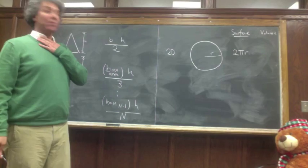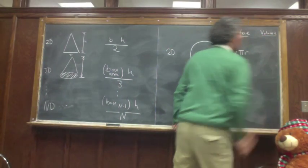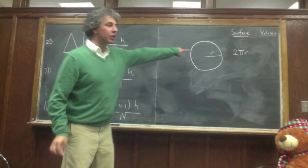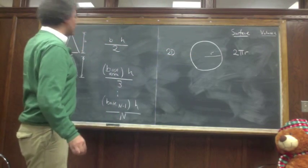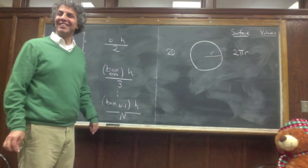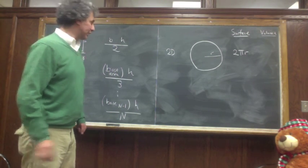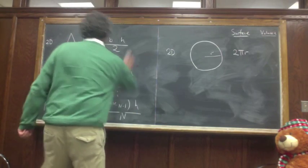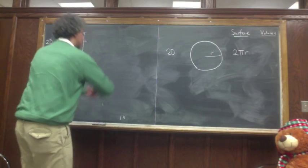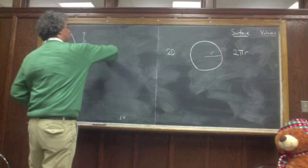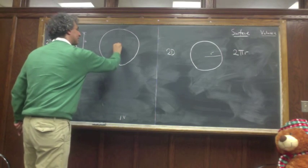What about the volume? I guess in two dimensions we call it area. Well, there's a way of turning this circle into a bunch of triangles. And the way we do this is we take a circle and make thin slices — here is my circle, I make lots of thin slices. It's like a pizza.